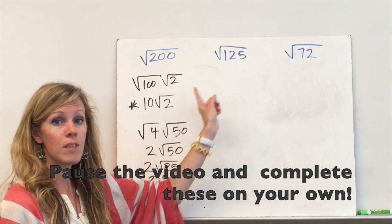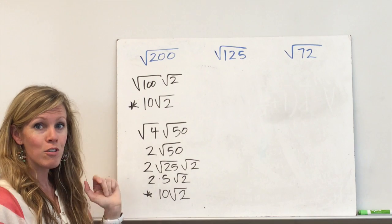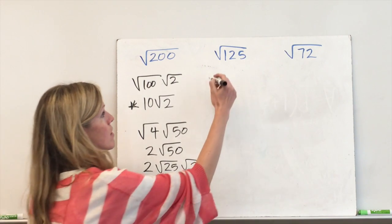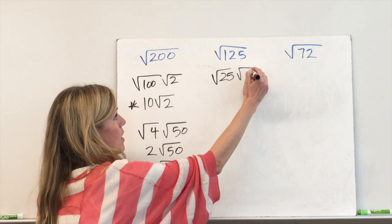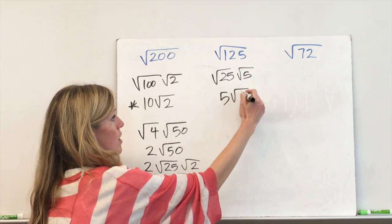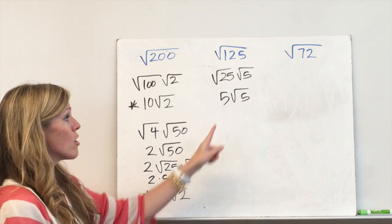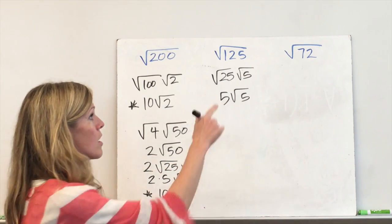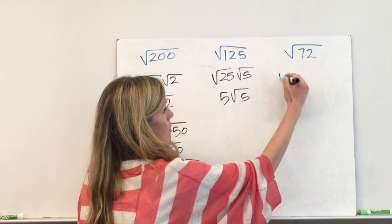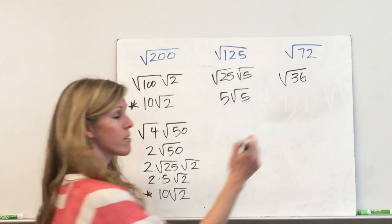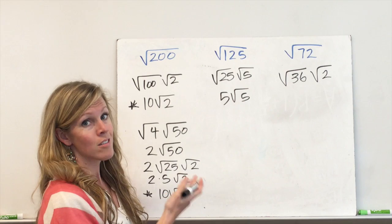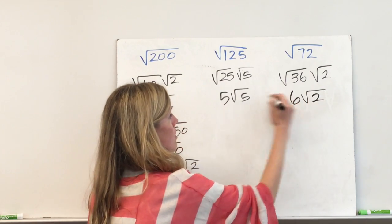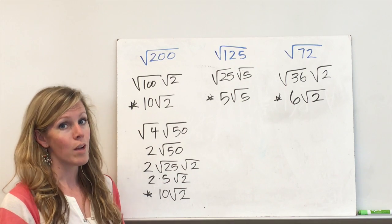Pause the video now and try both of these problems on your own. Welcome back — hopefully you tried these problems. For the square root of 125, the perfect square factor is 25, and 25 times 5 is 125. The square root of 25 is 5, giving us 5 radical 5 as the simplest form. For the square root of 72, I recognize that 36 is a factor of 72, and 6 squared is 36, so 36 is a perfect square. Radical 36 is 6, so the simplest form of radical 72 is 6 radical 2.